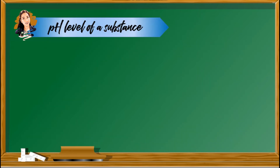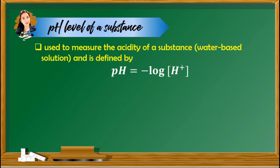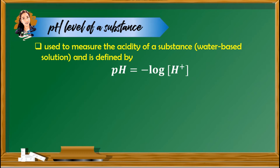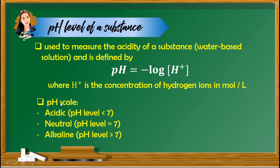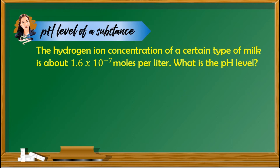The third application of logarithm is to find the pH level of a substance. It is used to measure the acidity of a water-based solution and is defined by: pH equals the negative logarithm of the concentration of hydrogen ions in moles per liter. The hydrogen ion concentration of a certain type of milk is about 1.6 times 10 raised to negative 7 moles per liter. What is the pH level?